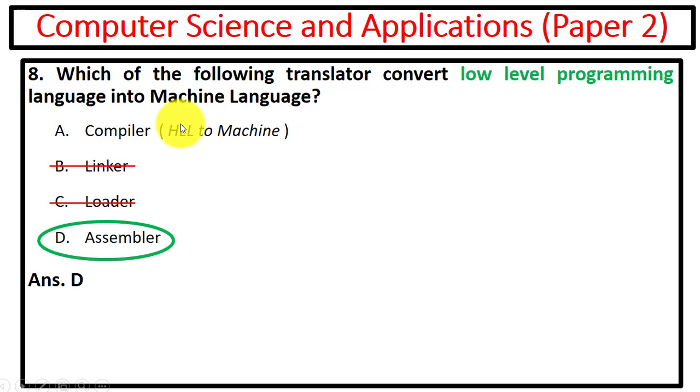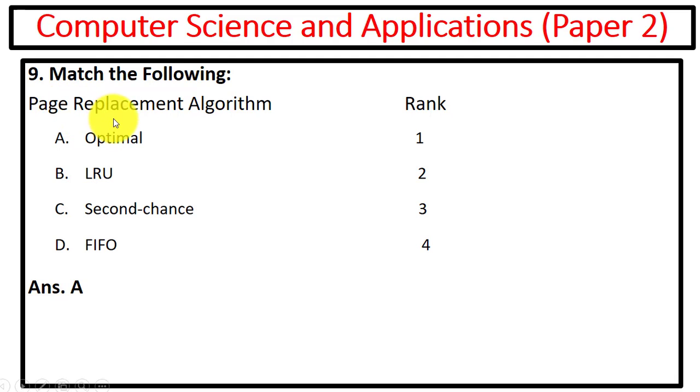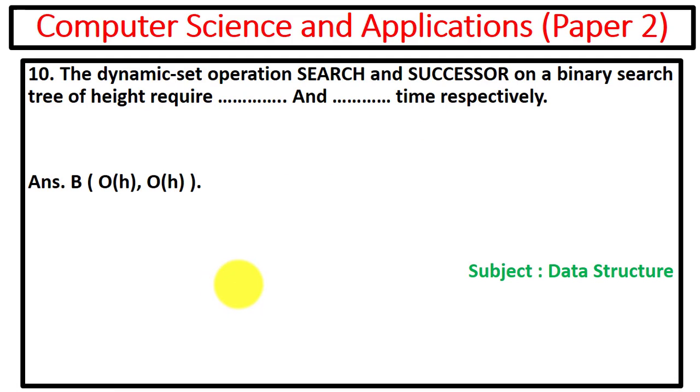Now we have to match the following, that is we have different page replacement algorithms and we have to rank these algorithms. For this you can see that's the correct order for the page replacement algorithm. Next question is the dynamic set operation search and successor on a binary search tree of height h, here we have height h, require and time respectively, that's O(h) and O(h).